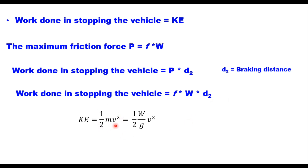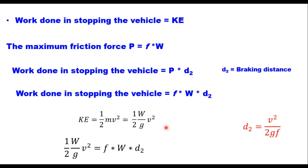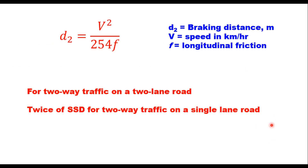Converting v to kilometers per hour and substituting g = 9.8 m/s², the braking distance equation becomes d2 = v² / (254f), where d2 is in meters, v is in km/h, and f is the longitudinal coefficient of friction. For two-way traffic on a two-lane road, the minimum stopping sight distance is d1 + d2. For two-way traffic on a single-lane road, SSD will be twice of (d1 + d2).